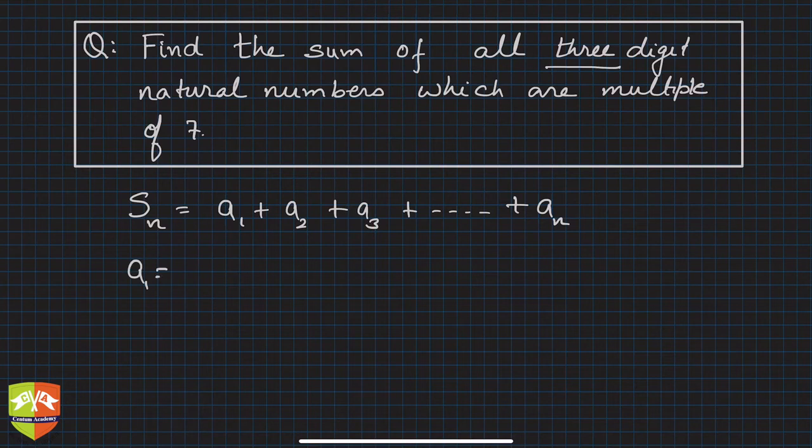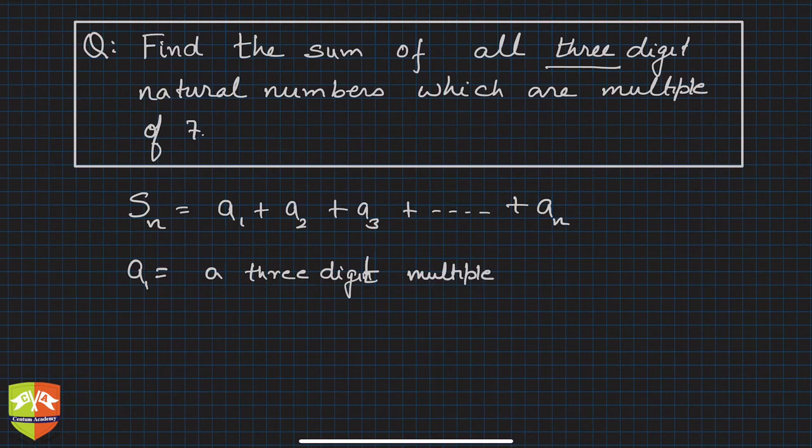So we have to find out a1. What is a1? A three digit multiple of seven - first. It is the first three digit multiple of seven.